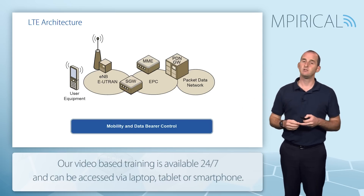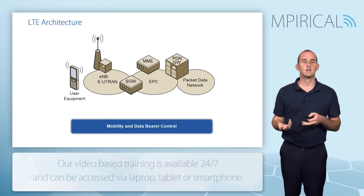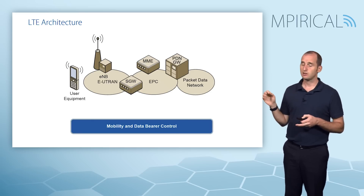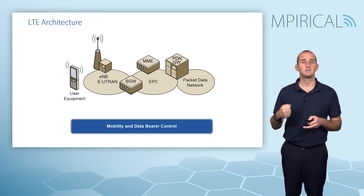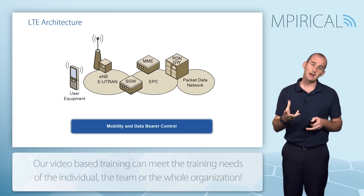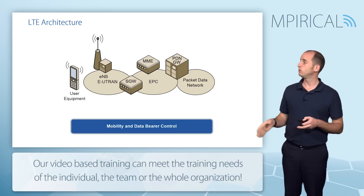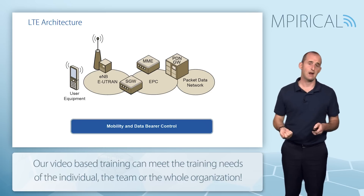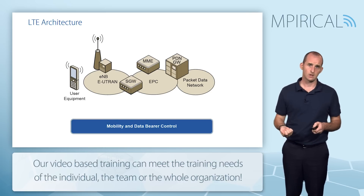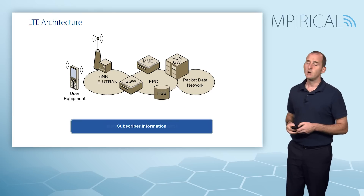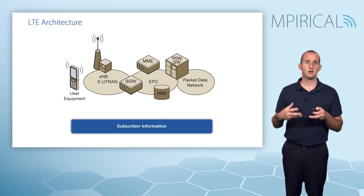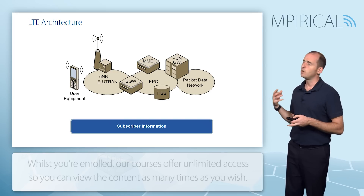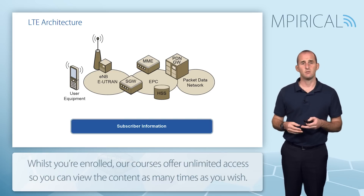The controlling element of the network is the Mobility Management Entity (MME). This device looks after mobility management and session management — it tracks a user's mobility and governs the establishment of data bearers. Supporting the MME is the Home Subscriber Server (HSS), which is akin to the HLR and serves as a central repository of subscriber information.